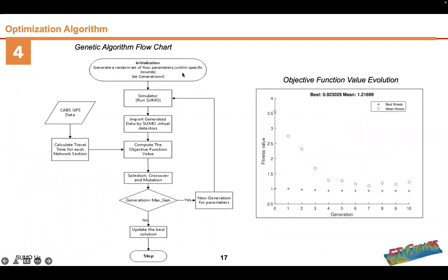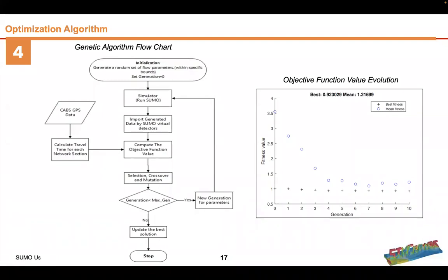Moving on to the genetic algorithm flowchart: initialization was done using a random set of flow parameters within specific bounds, between 0.05 to 0.20. These were passed to the simulator to run SUMO using TraCI, and generated data from the SUMO virtual E3 detectors was imported to get travel time. In parallel, we injected the CABs GPS-calculated travel time to compute the PMRE values, and then followed the typical genetic algorithm path. We observed that after 10 generations we were not getting any more improvements, so we stopped the genetic algorithm at 10 generations.